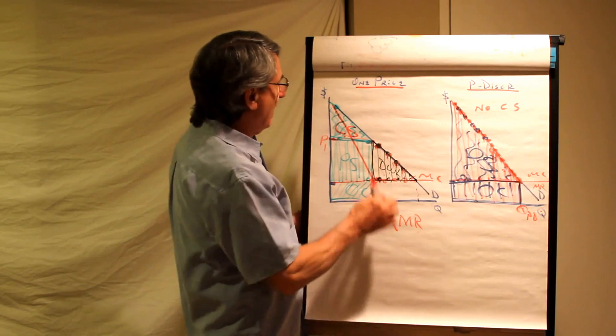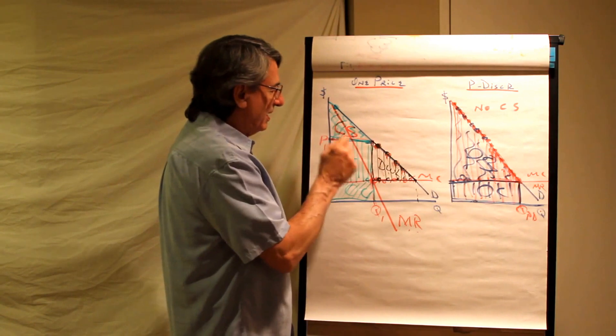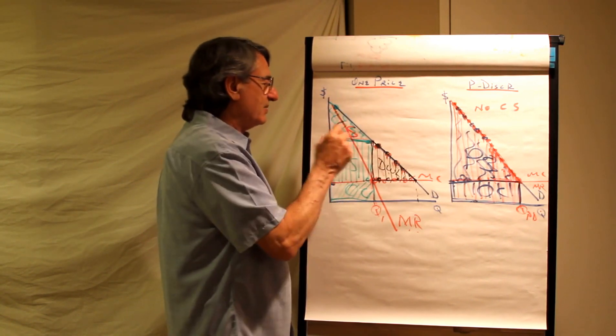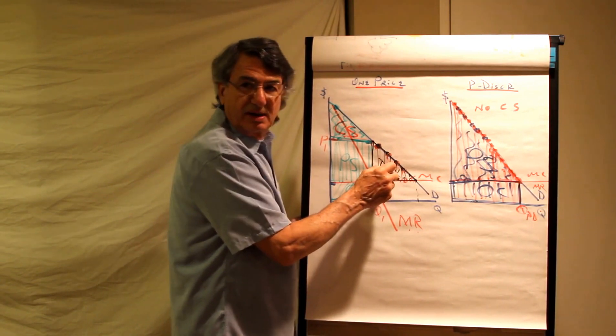So there we have it, one price, different marginal revenue, that's the quantity price, total revenue is that amount, consumer surplus, producer surplus, opportunity cost, and good old dead weight loss here.